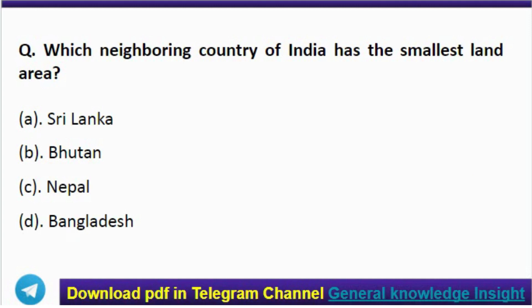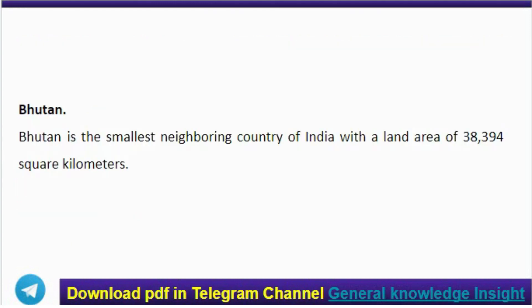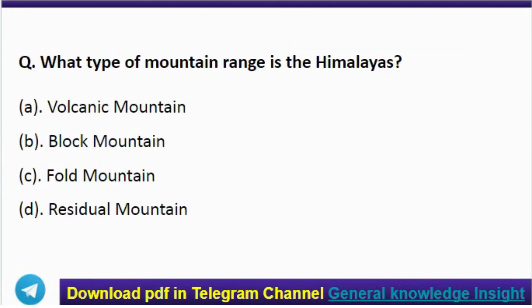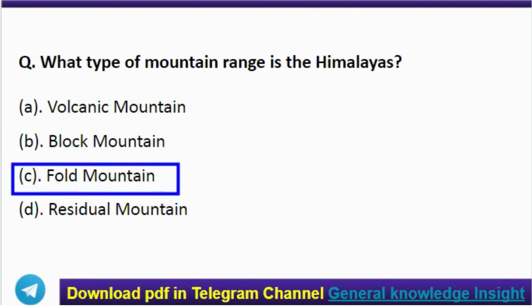Next question: which neighboring country of India has the smallest land area? The correct answer is option B — Bhutan. Next question: what type of mountain range is the Himalayas? The correct answer is option C — fold mountains.